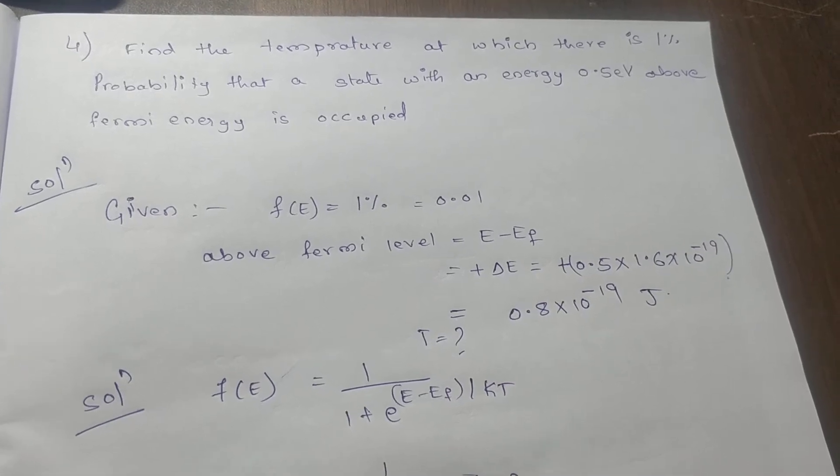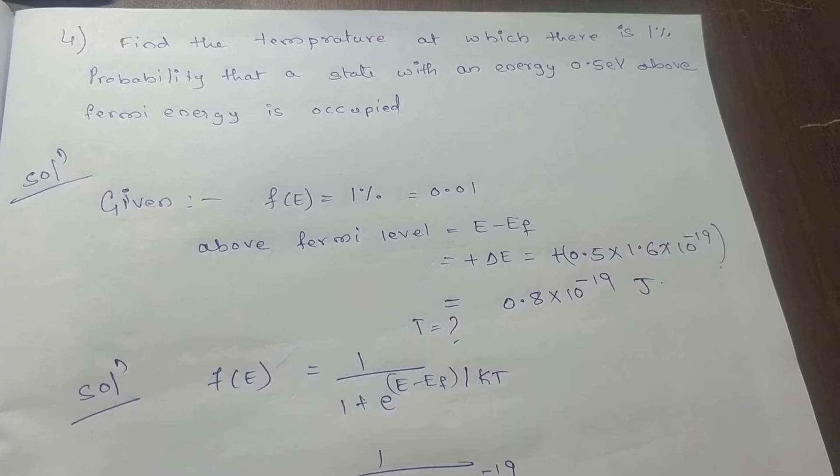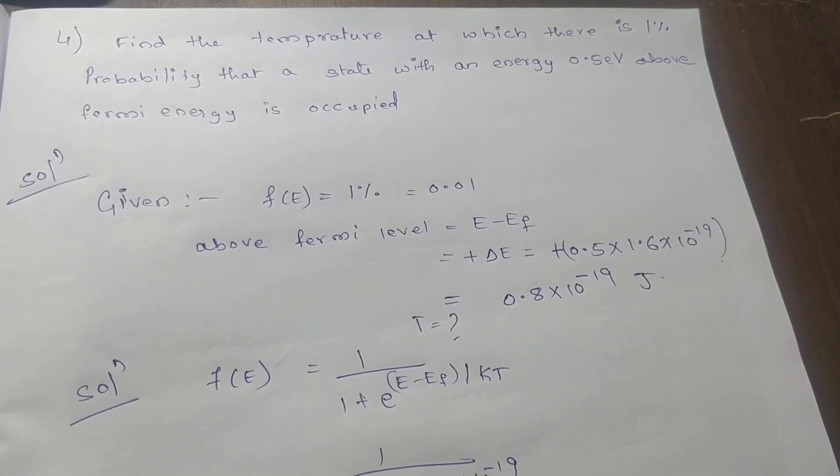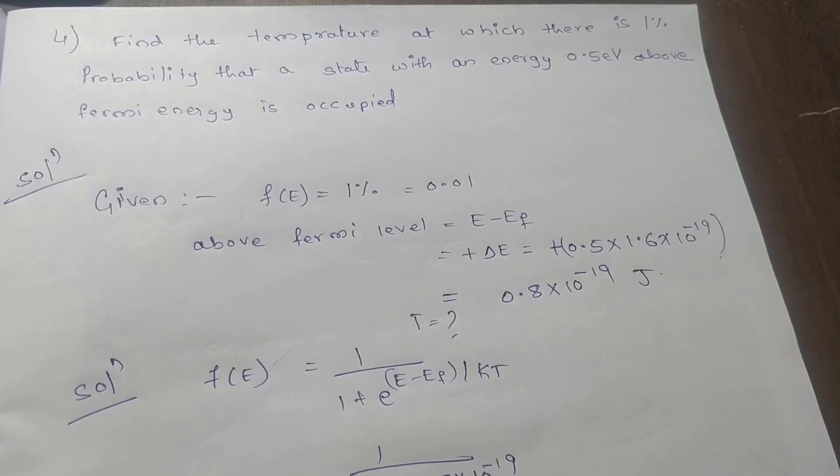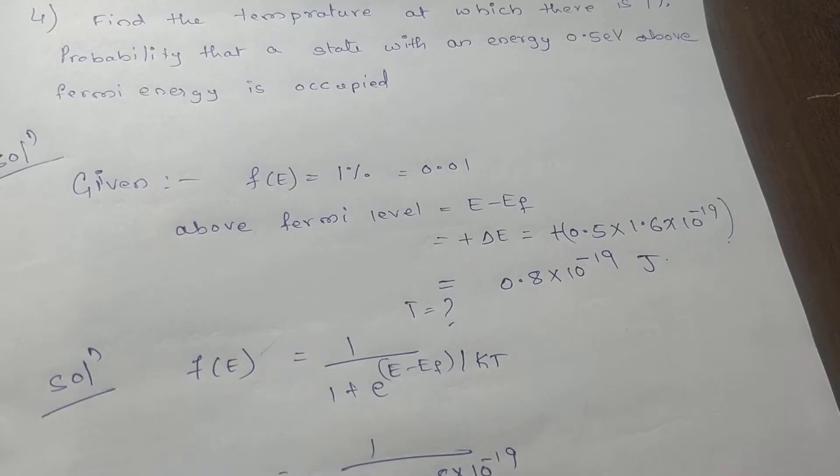Last numerical on Fermi-Dirac statistics. That is, find the temperature at which there is one percent probability that a state with an energy 0.5 electron volt above Fermi energy is occupied. Okay, so first before going for solving...